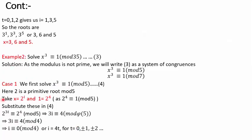Substituting i values 1, 3, and 5 into x = 3^i, we get the 3 roots as 3¹, 3³, and 3⁵, which are congruent to 3, 6, and 5 respectively. So x = 3, 6, and 5 are the 3 solutions.